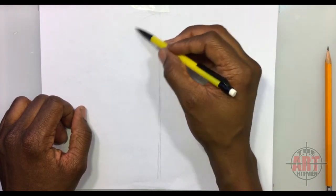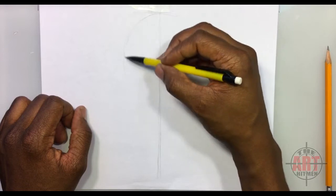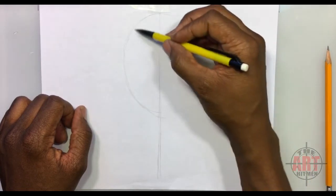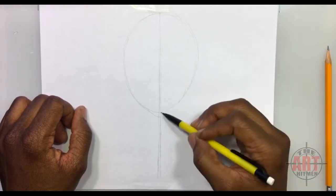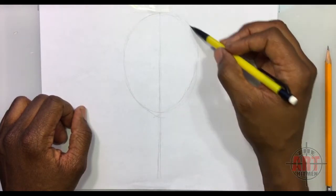So you want to start off with a simple oval shape for a head. Do the same thing for the left side of the head. Again, it doesn't have to be perfect.